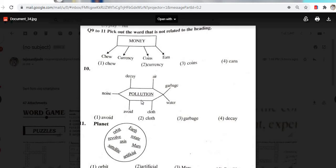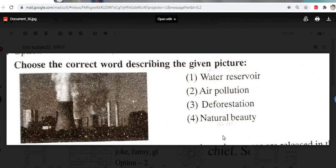Pick out the word that is not related to the heading. Money: queue, currency, coins, earn. Queue, option 1. Pollution: decay, air, garbage, water, cloth, avoid, noise. Cloth, option 2. Planet: orbit, Earth, revolve, rotate, axis, Mars, satellite, artificial. Artificial, right answer.